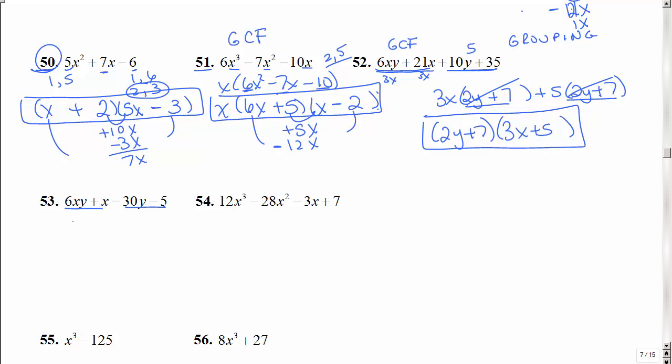Group, group. GCF is an x. Here they're both negative. I think they're both divisible by negative 5. Those match. So take that out. Divide. Write down what's left.